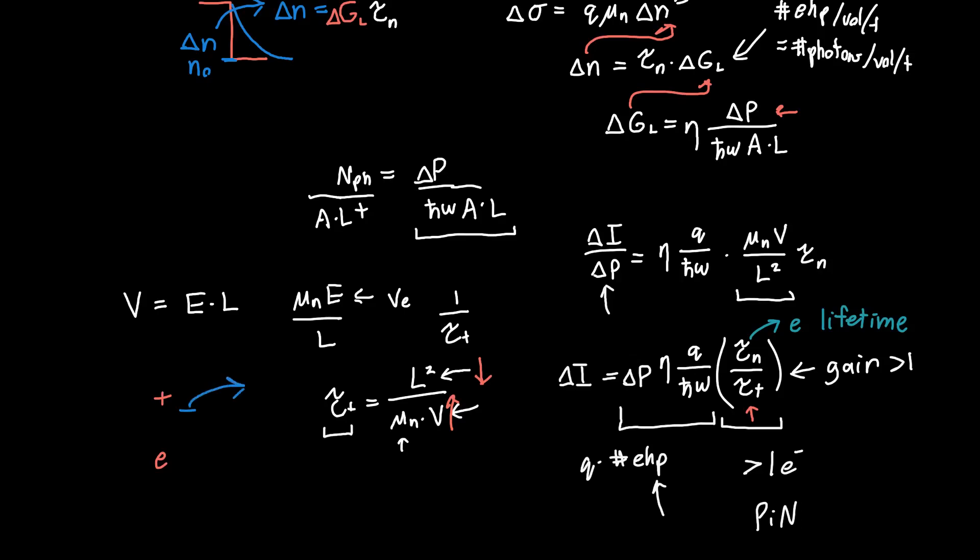...if we have one electron and one hole, these both get separated and then they get measured, and that's one unit of current or one electron's worth of current.